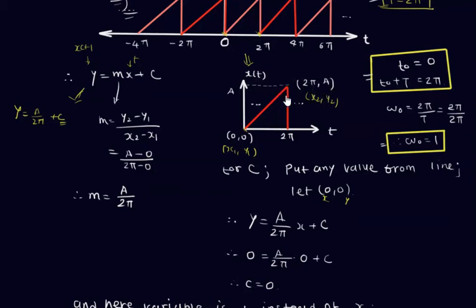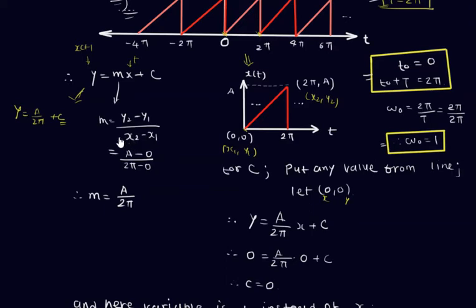Using the line equation y = mx + c, where y is our function x(t), x is the horizontal axis t, and c is the constant where the graph intersects the vertical axis. The slope m = (y2−y1)/(x2−x1) = (A−0)/(2π−0) = A/2π. So m = A/2π.